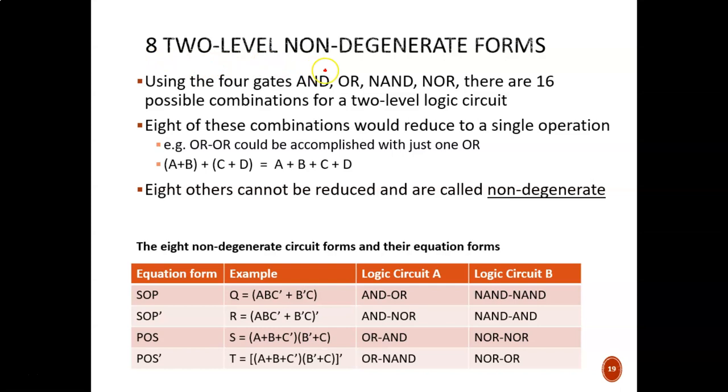There are eight two-level non-degenerate forms. What does that mean? Well, if we use the four main logic gates - AND, OR, NAND, and NOR -